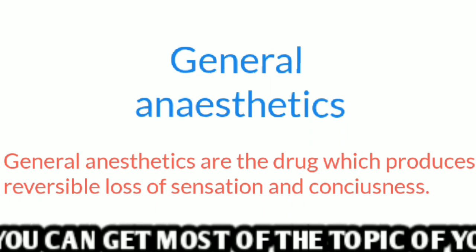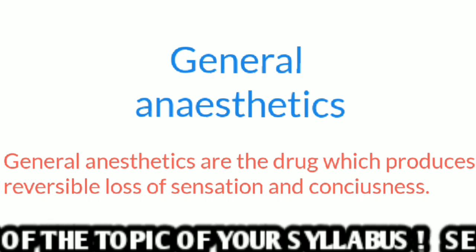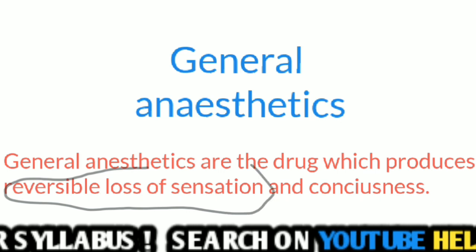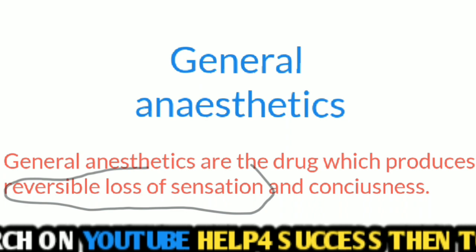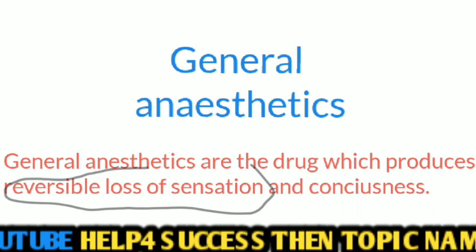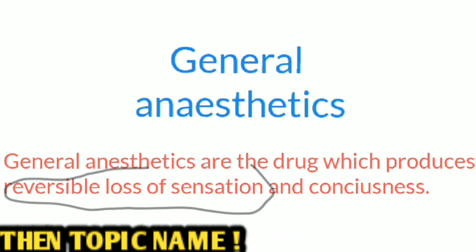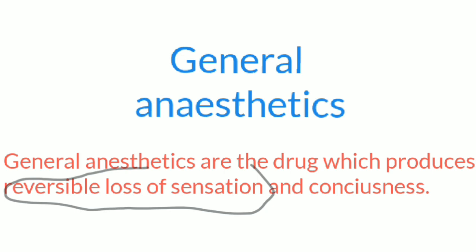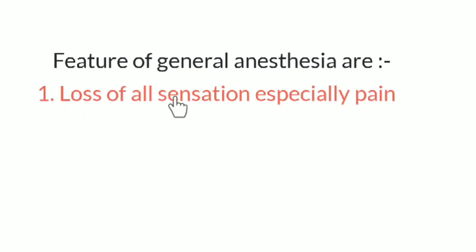General anesthetics are drugs which produce reversible loss of sensation and consciousness. Reversible loss of sensation means when the drug acts on the body, it does not feel any pain during any surgery or injury. When the action of the drug is removed from the body, then during surgery or any injury it can feel pain. This is the simple meaning of reversible loss of sensation.